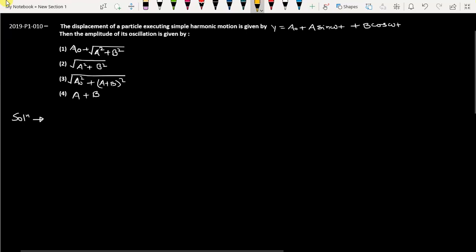This question is from NEET 2019 paper code P1 question number 10. The displacement of a particle executing simple harmonic motion is given by y equals a₀ plus a sin ωt plus b cos ωt. Then the amplitude of its oscillation is given by: